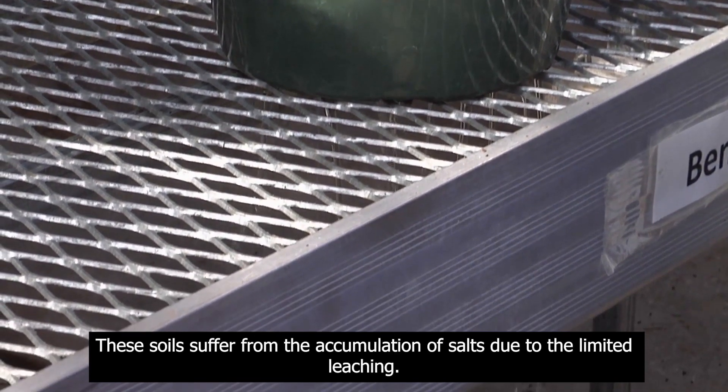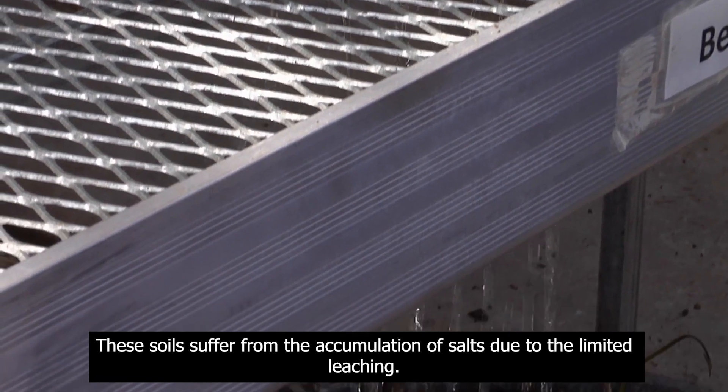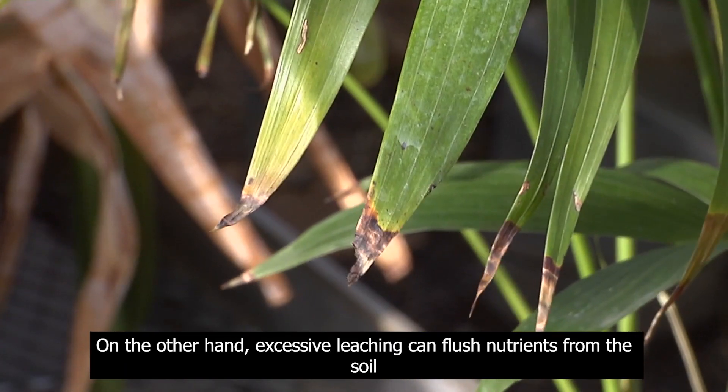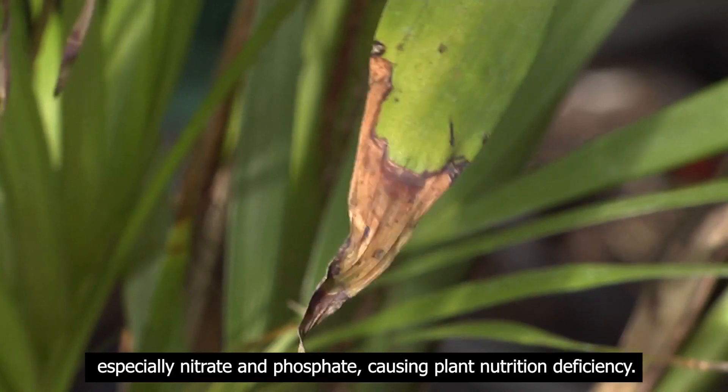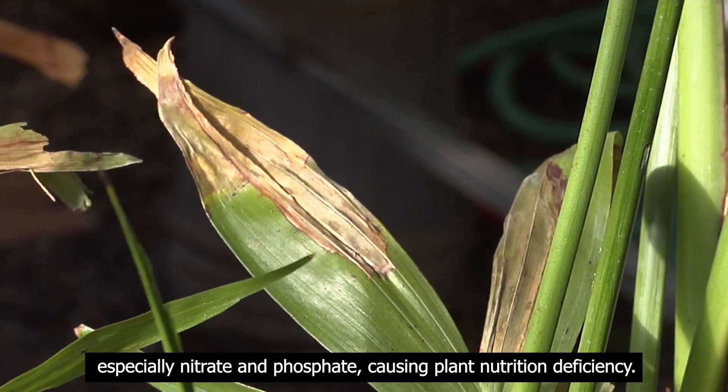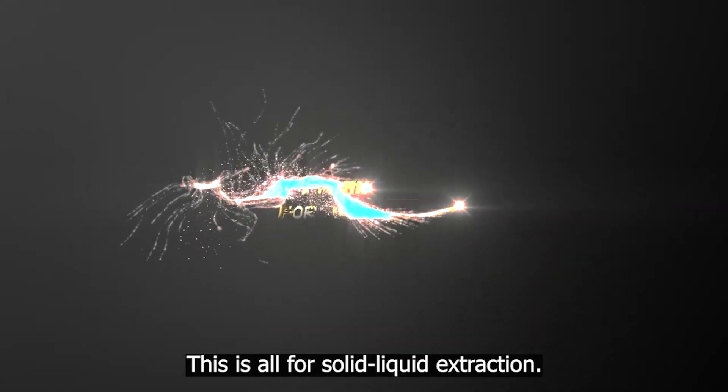These soils suffer from the accumulation of salts due to the limited leaching. On the other hand, excessive leaching can flush nutrients from the soil, especially nitrate and phosphate, causing plant nutrition deficiency. This is all for solid liquid extraction.